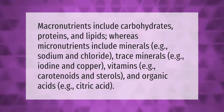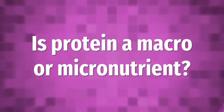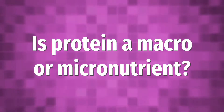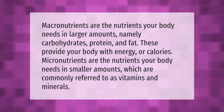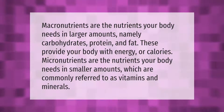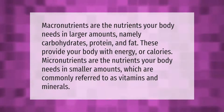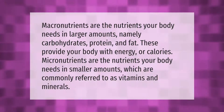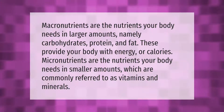Macronutrients are the nutrients your body needs in larger amounts — namely carbohydrates, protein, and fat. These provide your body with energy or calories. Micronutrients are the nutrients your body needs in smaller amounts.